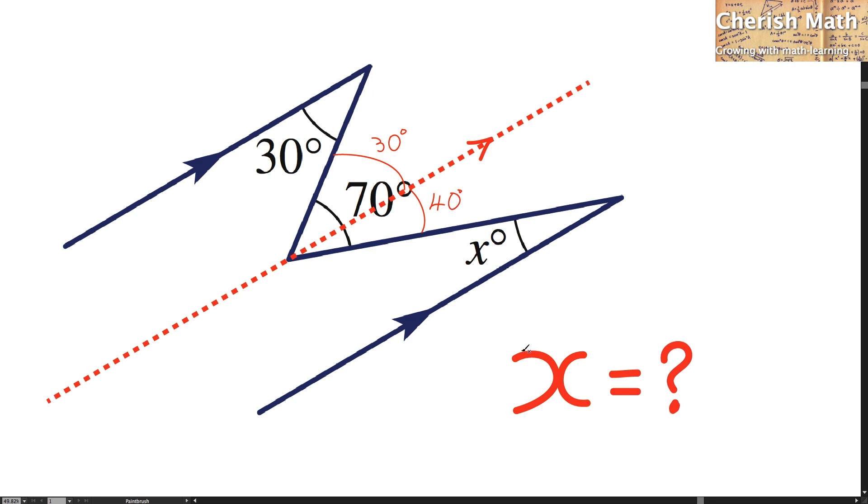And now we are going to the final part to solve the value of the X, and I got here is 40 degrees, simply because the angle 40 degrees is alternate with the angle of the X here.